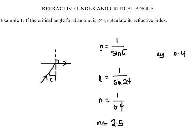And that is our refractive index. So first of all, you replace C with the critical angle you are given. You calculate sine 24, and then after that, you divide 1 by the answer that you get. And that is the refractive index of the diamond stated in this case. The diamond has a refractive index, N of 2.5.